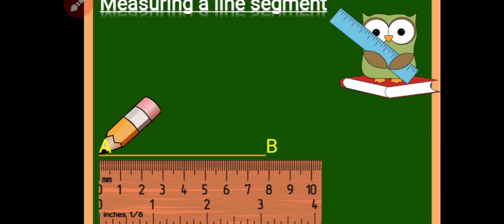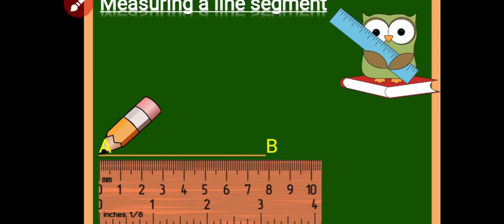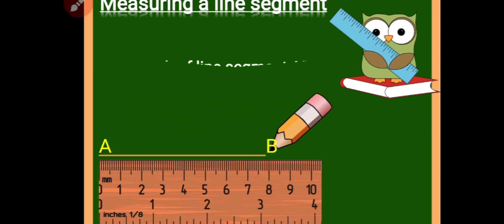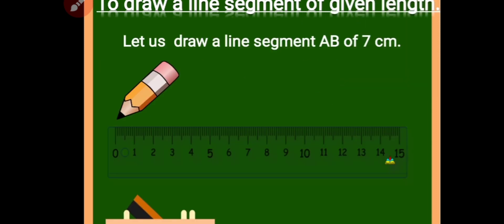How do you measure a line segment? Place the line near the zero of the ruler. The first endpoint will be at zero, and where the second endpoint falls gives you the reading. That will be the measurement of the line segment. The length of line segment AB is 8 centimeters.